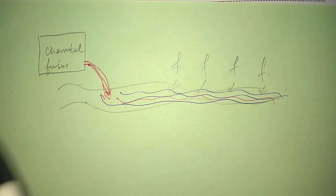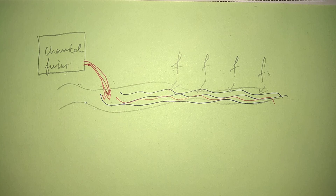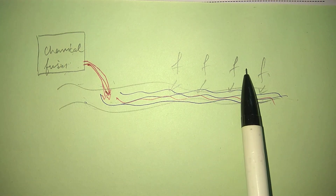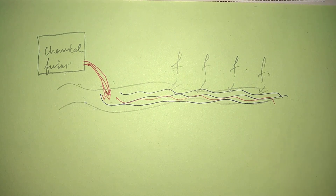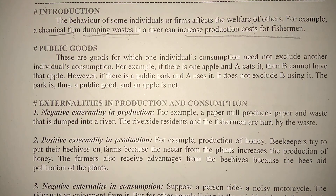तो ऐसे कोई भी firm या individual जब काम करते हैं और उनके काम से दूसरों के ऊपर positive impact पड़ता है तो positive externality, और negative impact पड़ता है तो negative externality generate होती है। This is about the introduction of externalities. For complete explanation of this topic, must watch all the 17 videos. Thank you for watching.